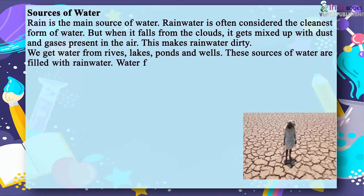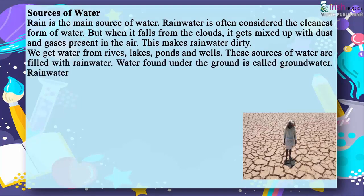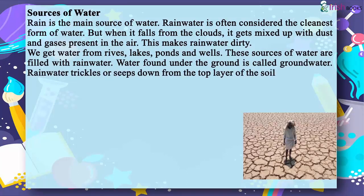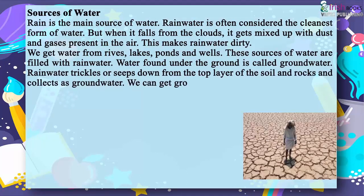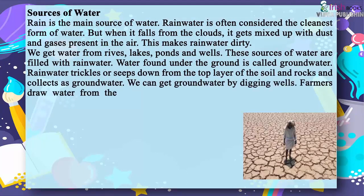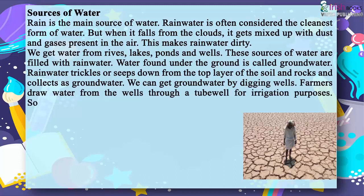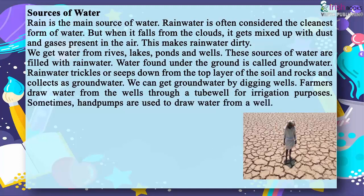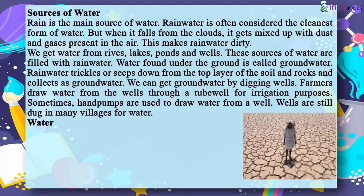Water found under the ground is called groundwater. Rainwater trickles or seeps down from the top layer of the soil and rocks and collects as groundwater. We can get groundwater by digging wells. Farmers draw water from wells through a tube well for irrigation purposes. Sometimes, hand pumps are used to draw water from a well. Wells are still dug in many villages for water.